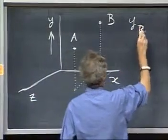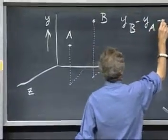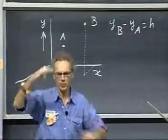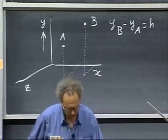And y of B minus y of A equals h. That's a given. So there's a height difference between A and between B.